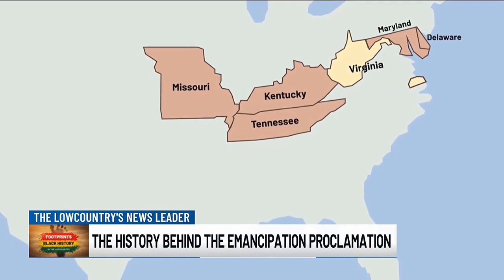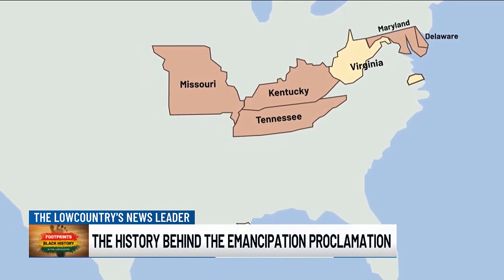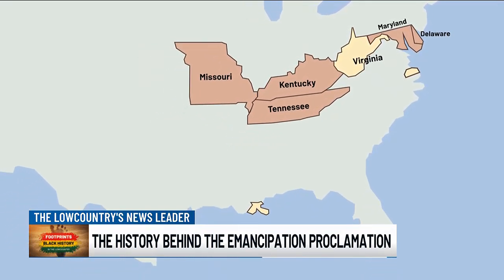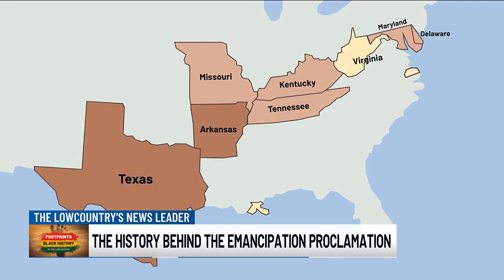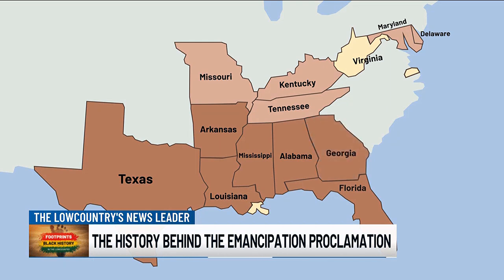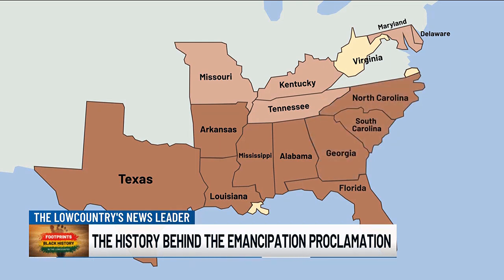The states that would be required to end slavery per the Emancipation Proclamation were Arkansas, Texas, the rebelling portion of Louisiana, Mississippi, Alabama, Florida, Georgia, South Carolina, North Carolina, and the rebelling portion of Virginia.